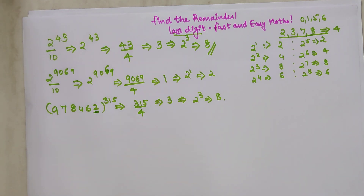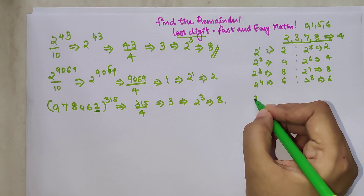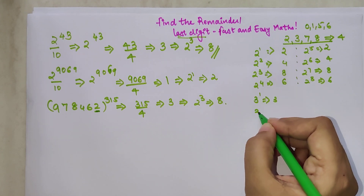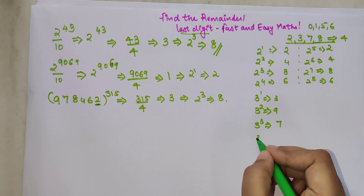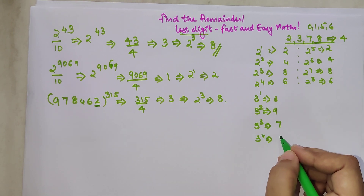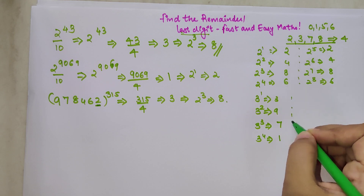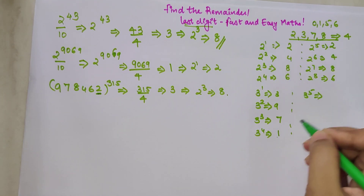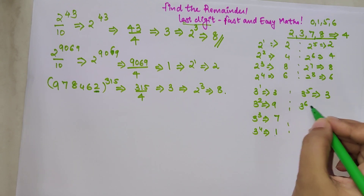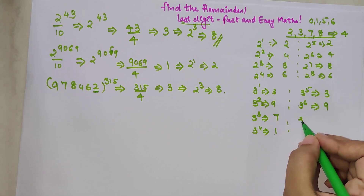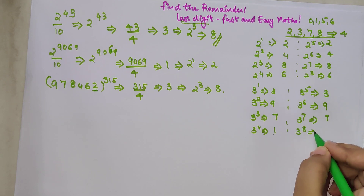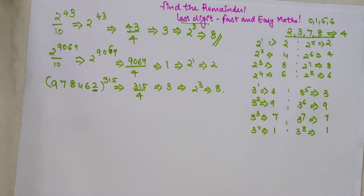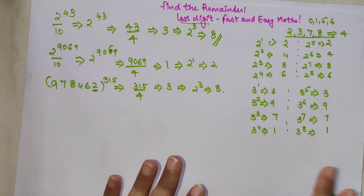Now let's look at the power cycle for 3. 3 raised to 1 is 3, 3 raised to 2 is 9, 3 raised to 3 — 9 × 3 = 27, last digit is 7. 3 raised to 4 — 7 × 3 = 21, last digit is 1. So the last digits cycle through 3, 9, 7, 1 with a power cycle of 4.